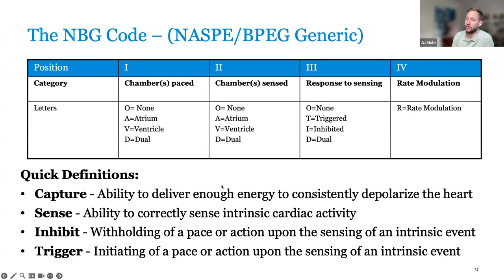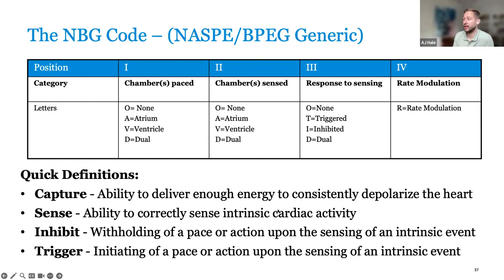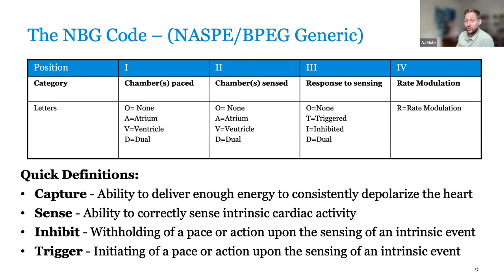Quick definitions: Capture is the ability to deliver enough energy to consistently depolarize the heart. Sensing is the ability to correctly sense intrinsic cardiac activity. Inhibit is withholding of a pace or action upon the sensing of an intrinsic event. Triggering is initiating of a pace or action upon the sensing of an intrinsic event.